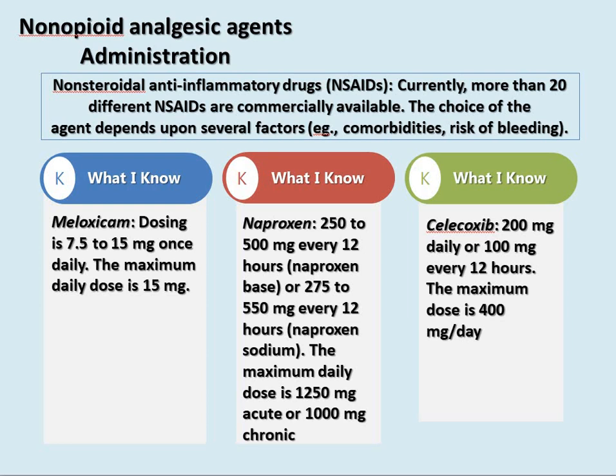Meloxicam: 7.5–15 mg once daily. Naproxen: 250–500 mg every 12 hours; maximum 1250 mg for acute pain or 1000 mg for chronic pain. Celecoxib: 200 mg daily or 100 mg every 12 hours, no more than 400 mg per day.